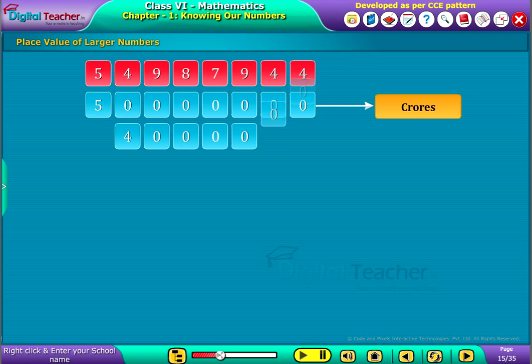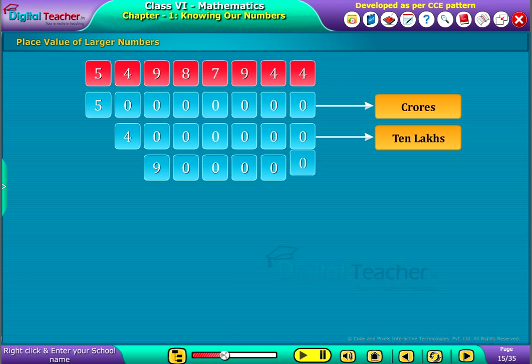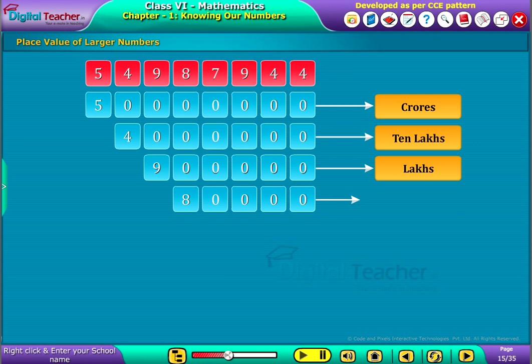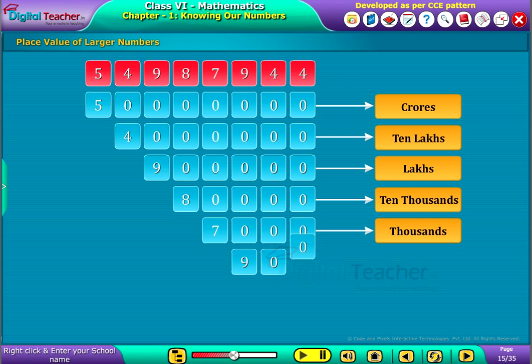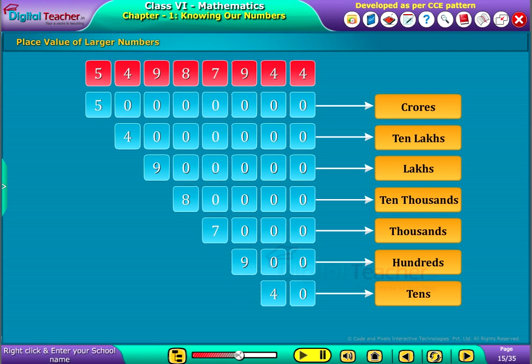4 is in ten lakhs place, 9 is in lakhs place, 8 is in ten thousands place, 7 is in thousands place, 9 is in hundreds place, 4 is in tens place, and 4 is in ones place.